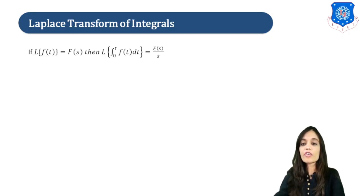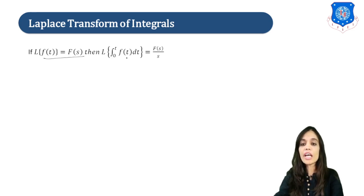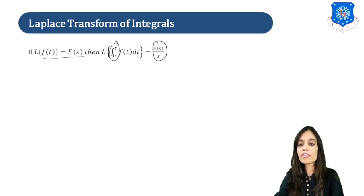If Laplace of f(t) is equal to F(s), then the Laplace Transform of the integral from 0 to t of f(t) dt is equal to F(s) upon s. So here, if we have an integration, then we have to divide F(s) by s.